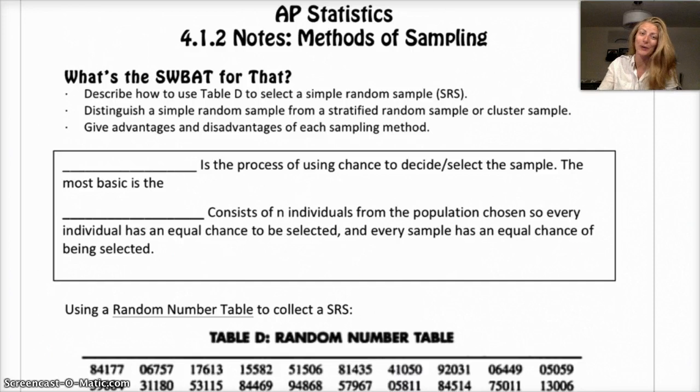Today we're moving on to 4.1.2 in the practice of statistics, which is talking about methods of sampling. In the last video, 4.1.1, we talked about bad sampling and how you can get bias when you're sampling poorly. So today we're going to talk about better ways to sample. Our SWBAT for today is to describe how to use table D, which is a table of random numbers, to create a random sample. We're also going to talk about what a simple random sample is, a stratified random sample, a cluster sample, and a systematic sample. We'll talk about some advantages and disadvantages of each method.